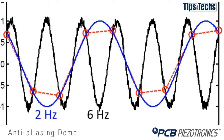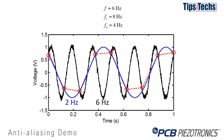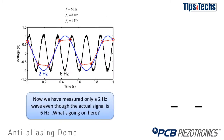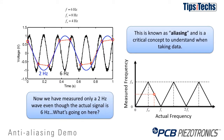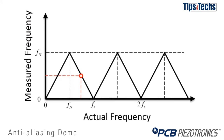So what happens when we sample this 6 Hz wave? If we connect the red circles using a sine wave, we end up with the blue curve, which is a 2 Hz sine wave. In reality the signal we want to measure is 6 Hz, and this phenomenon is called aliasing. Looking at the plot on the right, you can see actual frequency versus measured frequency for an aliased signal. Up to the Nyquist frequency you measure the actual frequency, but above the Nyquist frequency you start to measure frequencies below it — so as frequency increases, the observed frequency actually decreases.